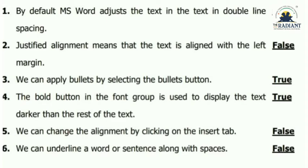Number six: by default MS Word accesses the text in double line spacing. The default is single line spacing, so it is false. Number seven: justified alignment means that the text is aligned with the left margin. Justified is different from left alignment — text aligned to the left is left alignment — so this sentence is false.